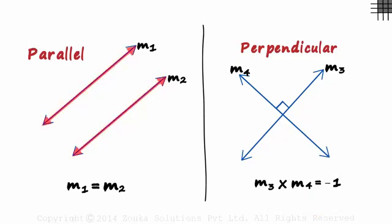If lines are parallel, their slopes are equal. And if they are perpendicular, then the product of their slopes is minus 1.